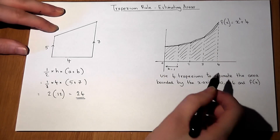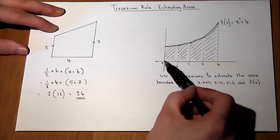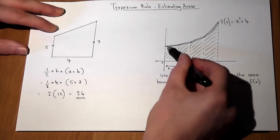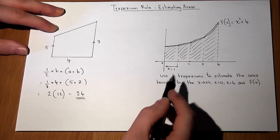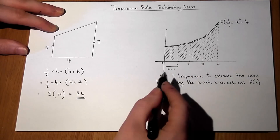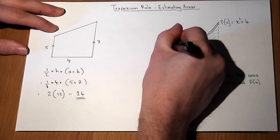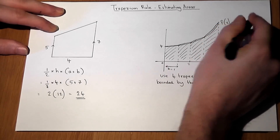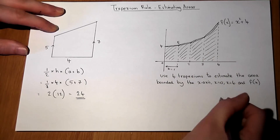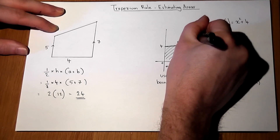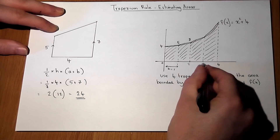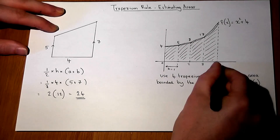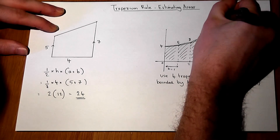I'm missing the heights, but I have the function so I can input the x-coordinates to work out the height of each line. When x is 0, y equals 4. When x is 1, y equals 1 squared plus 4, which is 5. When x is 2, 2 squared plus 4 is 8. When x is 3, 3 squared plus 4 is 13. And when x is 4, 4 squared plus 4 is 20.